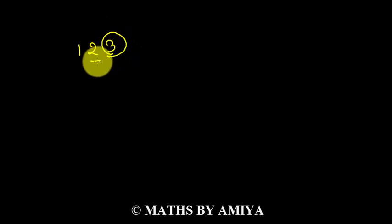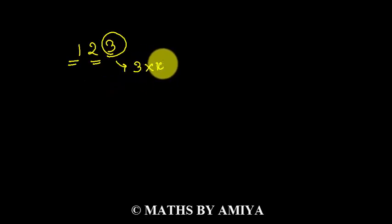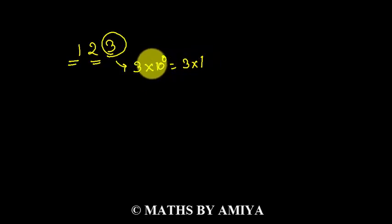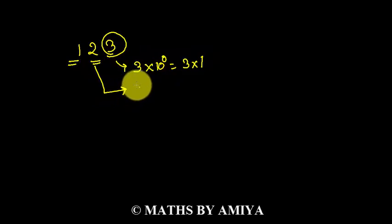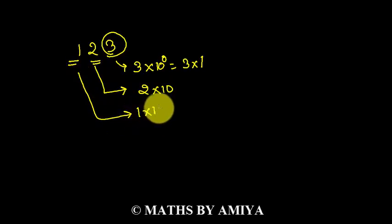The first concept is the formation of a number. If we have 123, this is the units place, this is the 10th place, and this is the 100th place. The units place means 3 into 10 raised to power 0, or 3 into 1, because we are working in a base system and the base is 10. For the 10th place, this is 2 into 10. For the 100th place, we have 1 into 100.